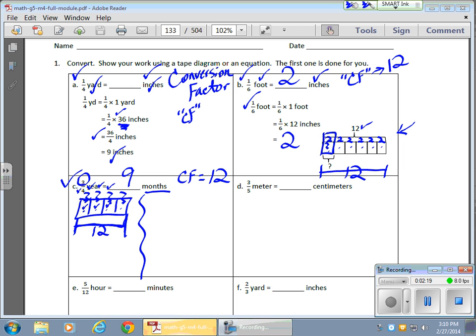Now, if I would like to write that out with an algorithm, I would say, okay, I need 3-quarters of 12, or 3-quarters times 12.